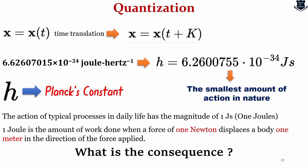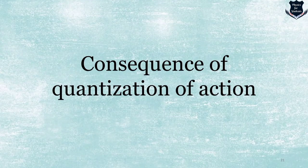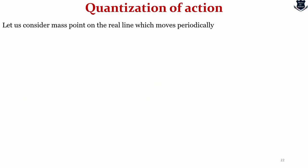Now the thing is what happens when this quantization is being applied? It has an enormous consequence. What are the consequences coming up in the next part of the video? Consequence of quantization of action. Now I'd like to take an example. Let's consider a mass point on the real line which moves periodically and we get an equation like this.